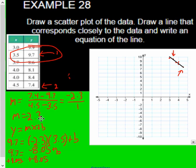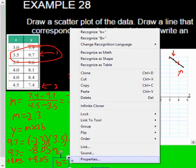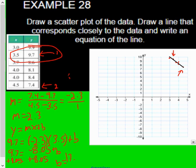Okay, 9.7 plus 8.05, so b is going to be 17.75.